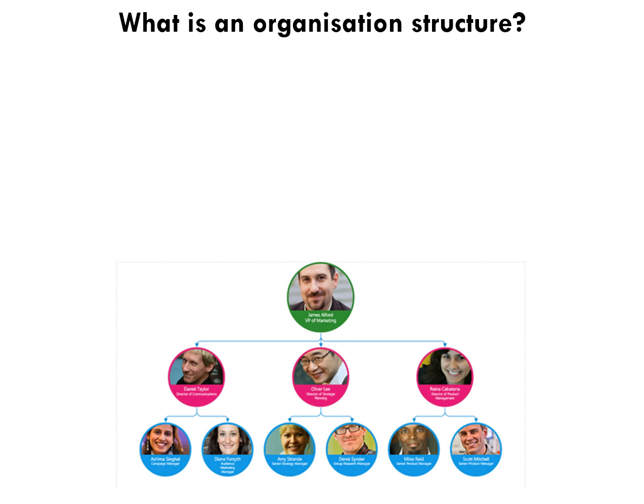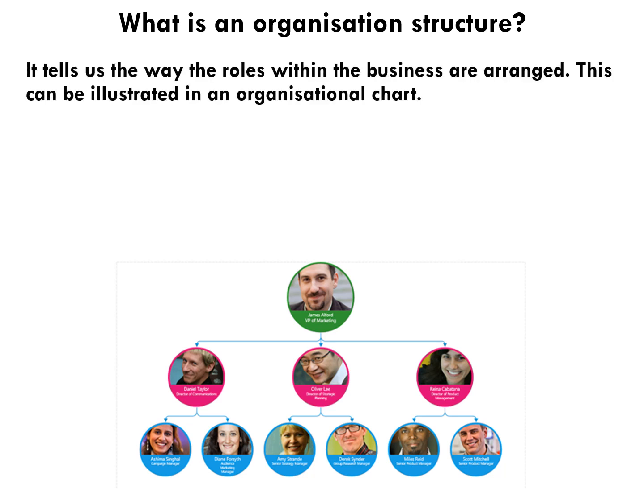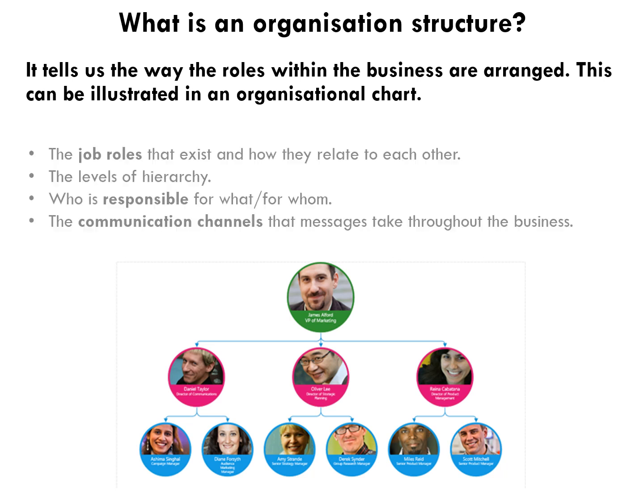Let's start off with what an organizational structure is. There's an example here at the bottom. An organizational structure tells us the way the roles within the business are arranged, and this can be illustrated in an organizational chart. We have the people who operate within the business, their roles and responsibilities, and how the business is organized — we can see the job roles within the business.